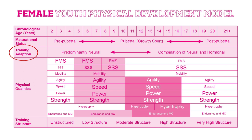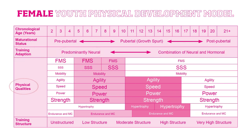Training adaptation refers to the child's response to training and the changes it creates in them. Before puberty those changes will be largely neural; as puberty advances they'll be both neural and hormonal. Training structure shows the levels of structure needed as a child develops — for example, at the younger stages training will mostly be formed around play, becoming increasingly structured as the child continues to develop and mature to focus on the specific physical skills they need.